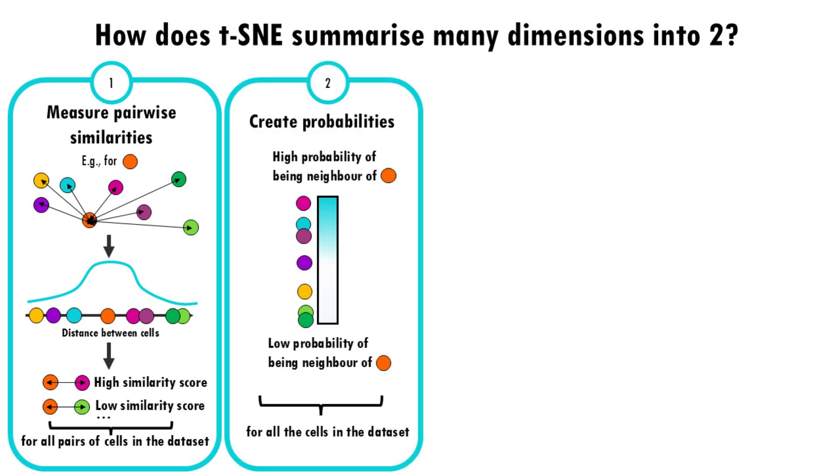Next, t-SNE creates probabilities. So the similarities we talked about are turned into probabilities. Think of it as a likelihood that two cells are close neighbors. The closer two points are, the higher the probability that they are neighbors.